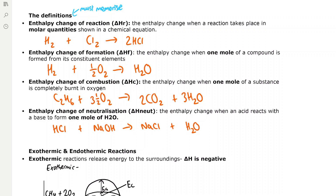Enthalpy change of formation is the enthalpy change when 1 mole of a compound is formed from its constituent elements. For example, hydrogen and half a mole of oxygen react to form 1 mole of H₂O.